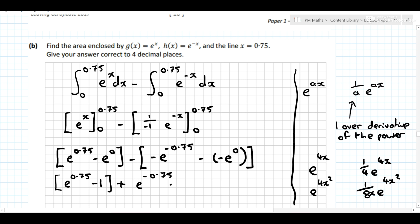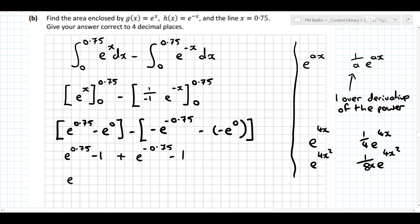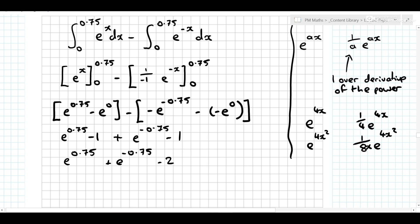Because I'm multiplied in by this minus, and then this is going to be minus by minus by minus, which is minus. Minus minus 1, and I can get rid of those brackets as well. So I have e^0.75 plus e^(-0.75) minus 2.